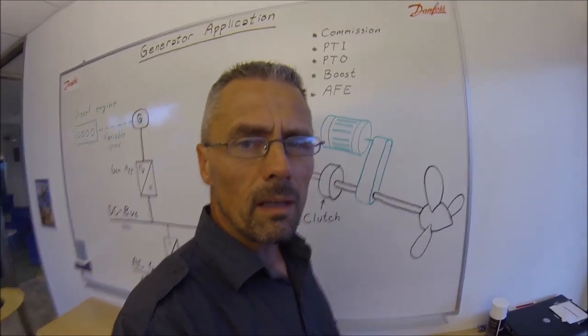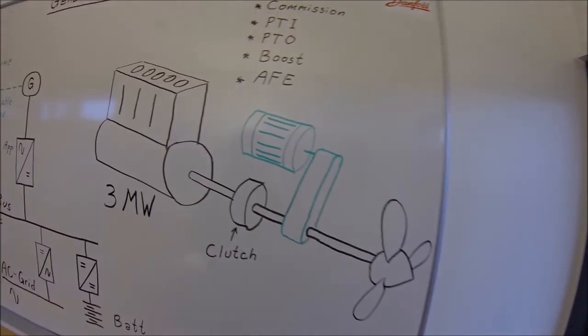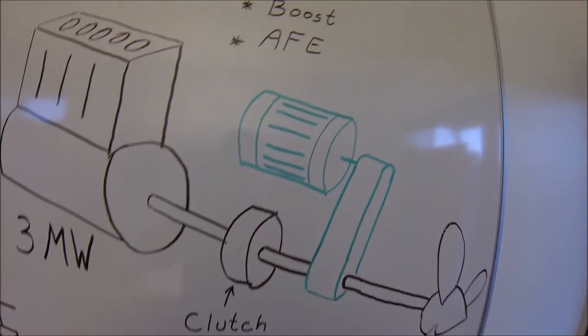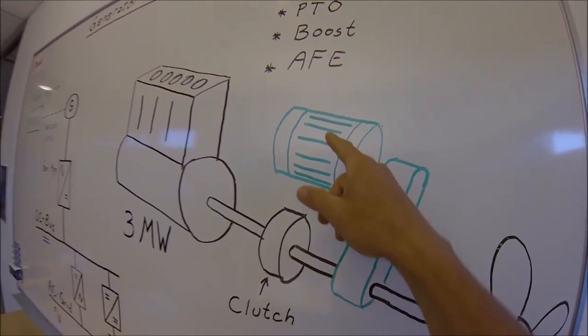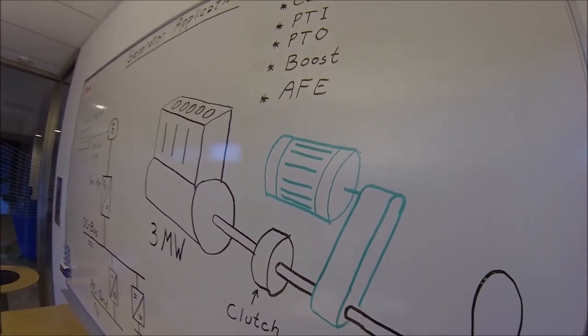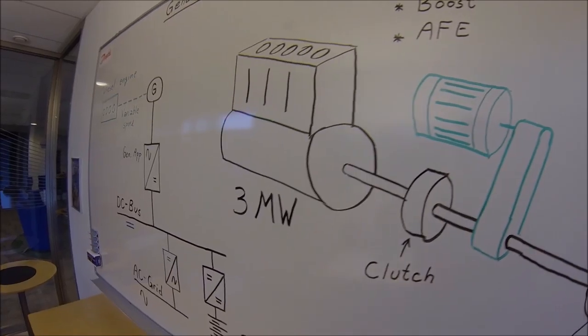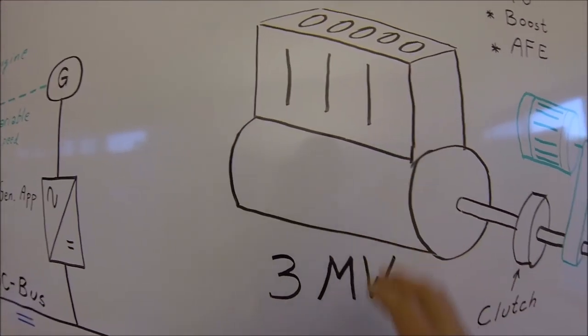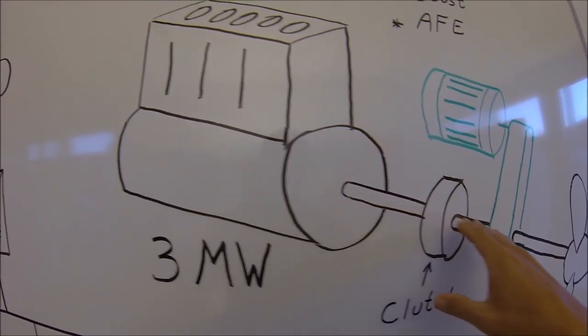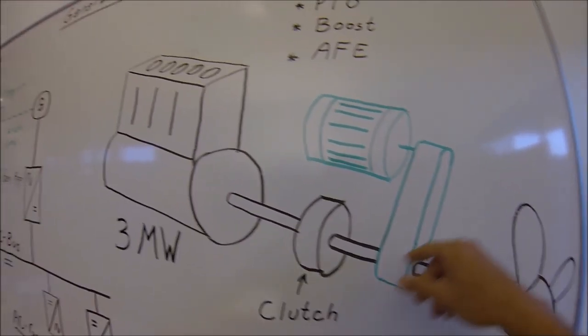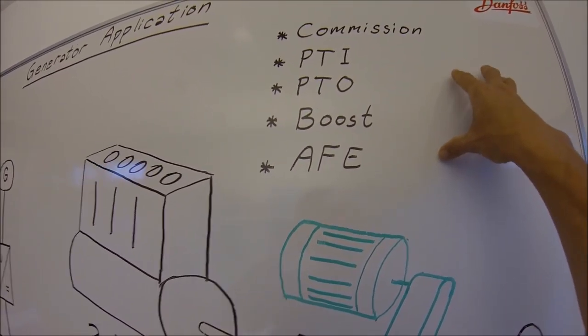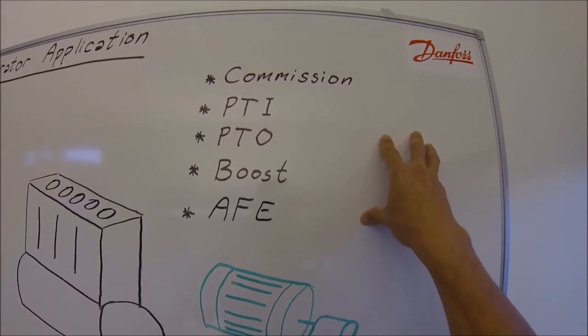The two main advantages with the generator application is that it's bi-directional. You can then use your generator as a diesel electric motor. The other one is that the big diesel engine can now use a wide range of RPMs and you still can extract energy to your 60 hertz ship grid.